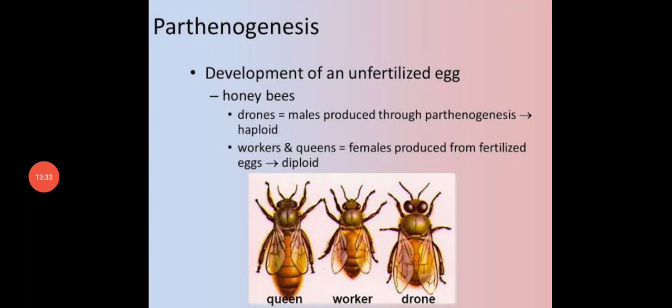In this picture, you can see the drones, which are otherwise called males, produced through Parthenogenesis — they are haploid. But the workers or queens are produced from the fertilized eggs and they are diploid. This is a good example of Incomplete Parthenogenesis.